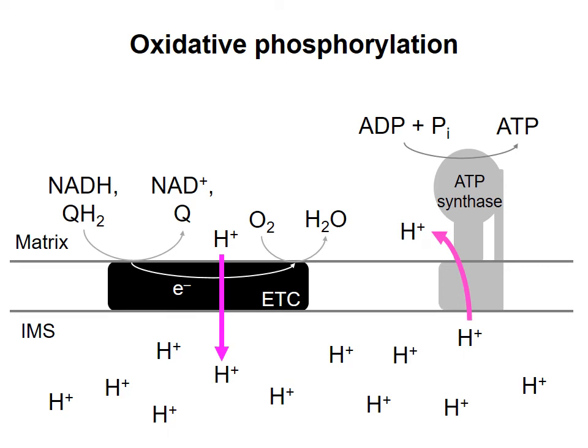In the preceding videos, we've seen how generation of a proton gradient by the electron transport chain allows synthesis of ATP, as ATP synthase allows protons to flow down their electrochemical gradient. Synthesis of ATP in this general way was proposed by Peter Mitchell in 1961 as the chemiosmotic hypothesis, and subsequent evidence has established that Mitchell was correct.